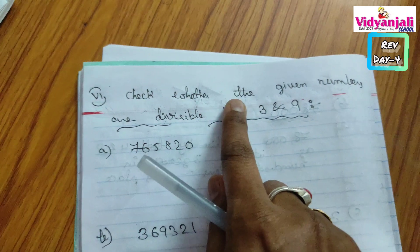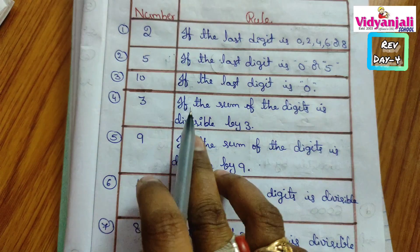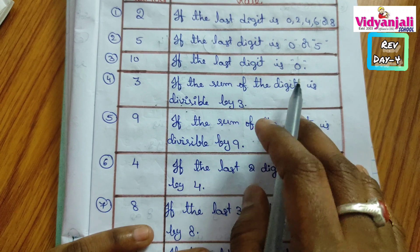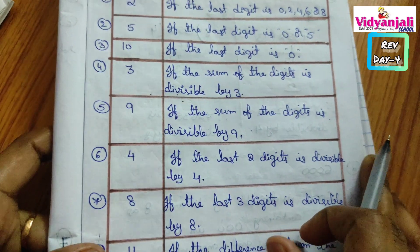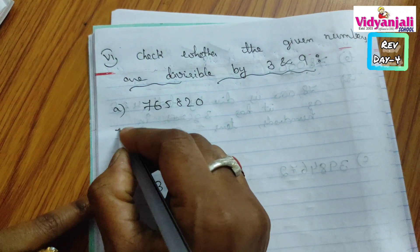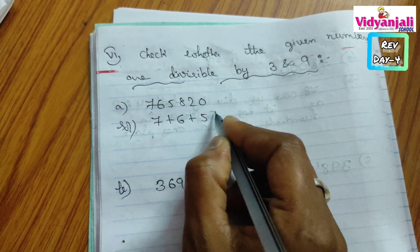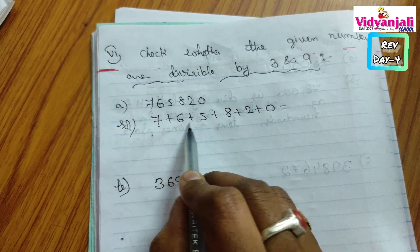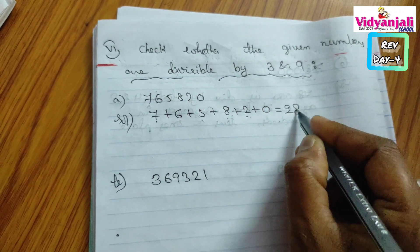Next, let's check 3 divisibility and 9 divisibility. First we must add all the digits in the number. Let's add 7 plus 6 plus 5 plus 8 plus 2 plus 0. 7 plus 6 is 13, plus 5 is 18, plus 2 is 20, plus 8 is 28. The sum is 28.